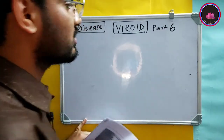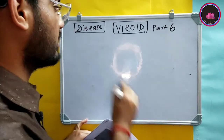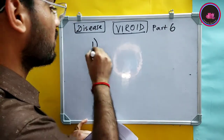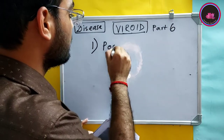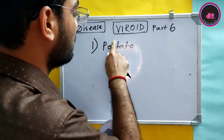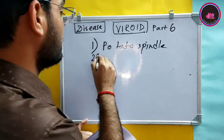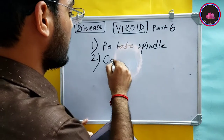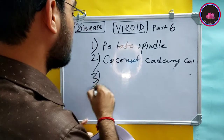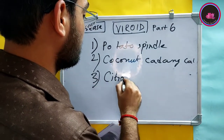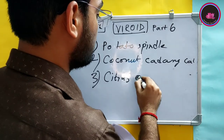In this video I will discuss some important diseases caused by viroids. There are three important diseases: the first is potato spindle tuber, the second is coconut cadang-cadang, and the third is citrus exocortis.